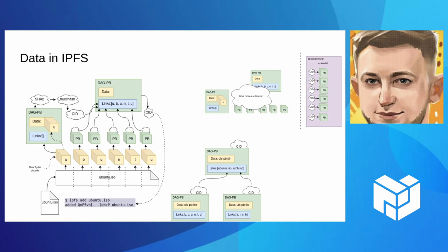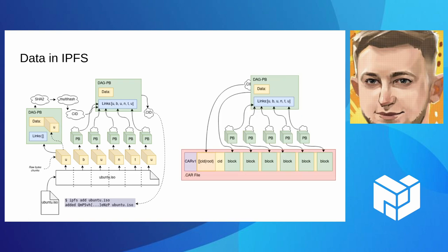For a file, it's just a nice balanced tree of DAG protobufs by default. For directories, we just get another DAG protobuf object per directory, unless the directory is really large. And then we put those objects into what we call a block store, which is just a glorified key-value store for mapping CIDs to the actual block data. We can also put those DAGs into what we call CAR files, which is just a way to store an IPLD graph or DAG on disk in a file.